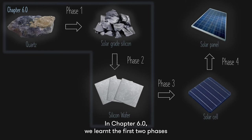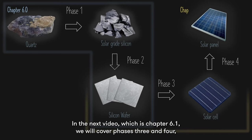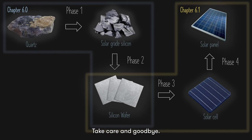That's it guys for chapter 6.0. In chapter 6.0, we learnt the first two phases of the solar panel manufacturing process, which is to turn quartz into silicon wafers. In the next video, chapter 6.1, we will cover phases 3 and 4, which is to transform silicon wafers into a commercial solar panel. Take care and goodbye.